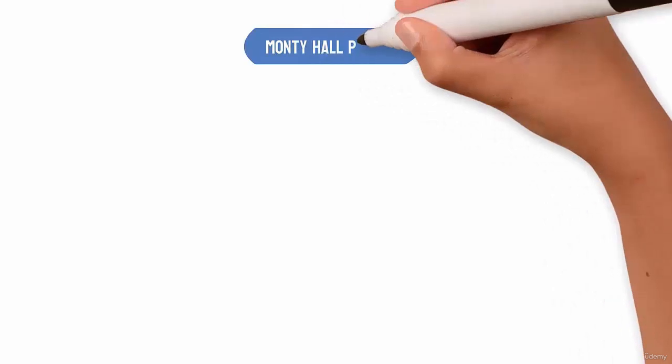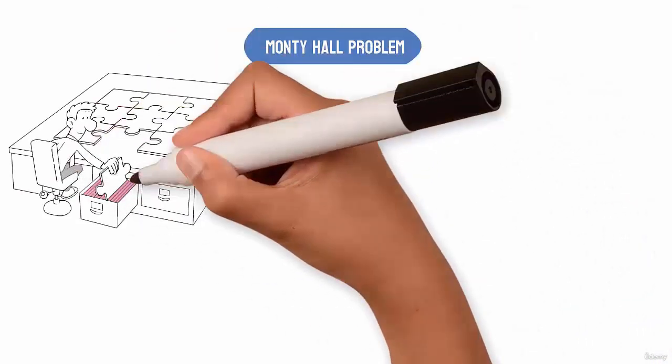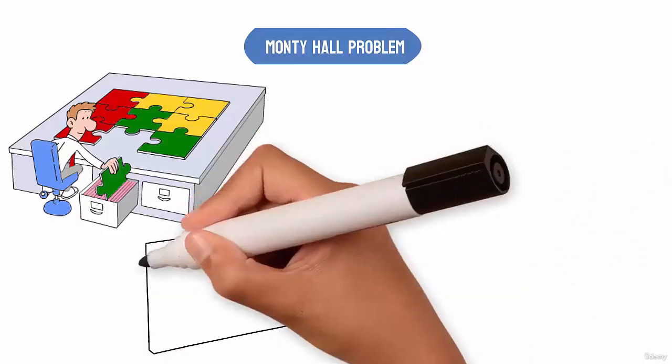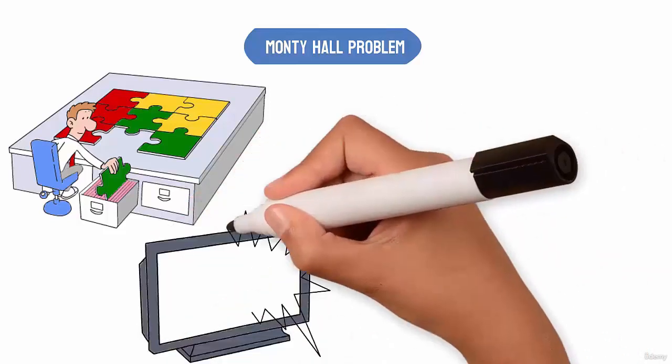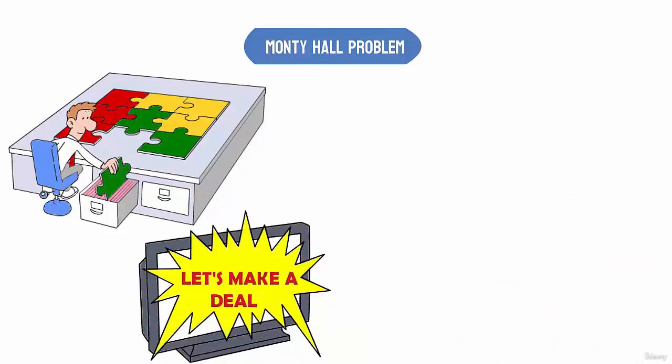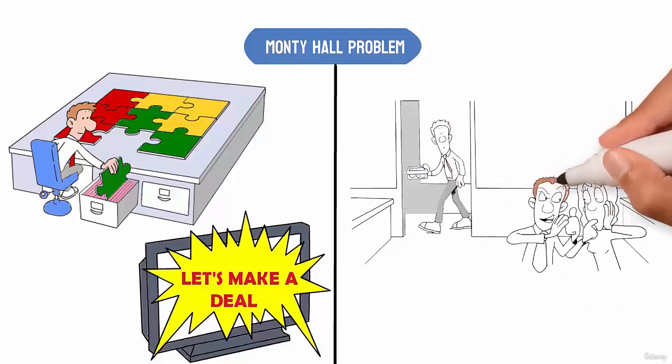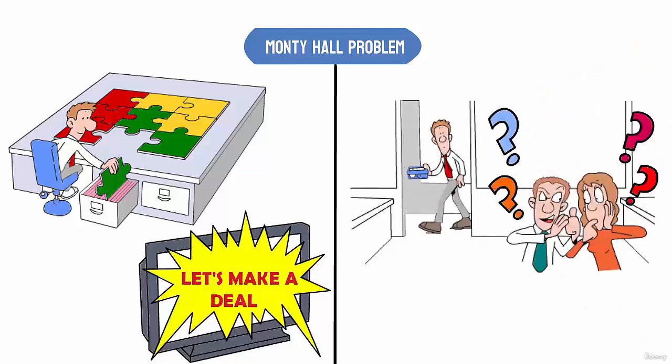The Monty Hall problem is a probability puzzle named after Monty Hall, the original host of the US TV show Let's Make a Deal. It's a famous paradox with a solution that is so absurd that most people refuse to believe it's true.